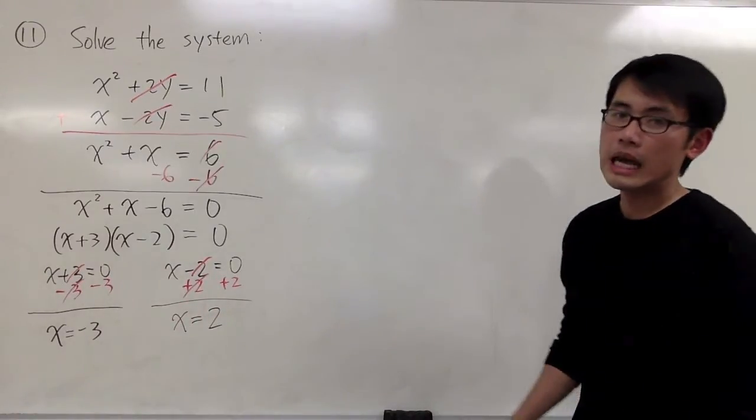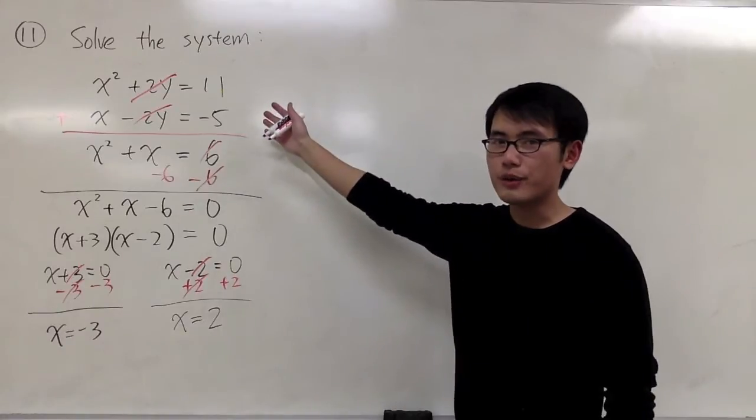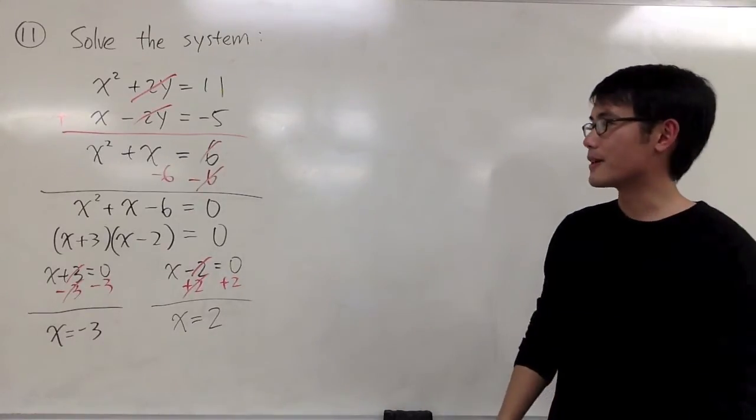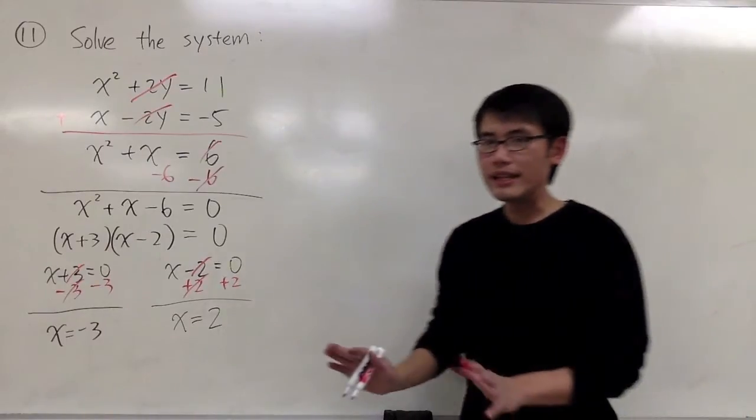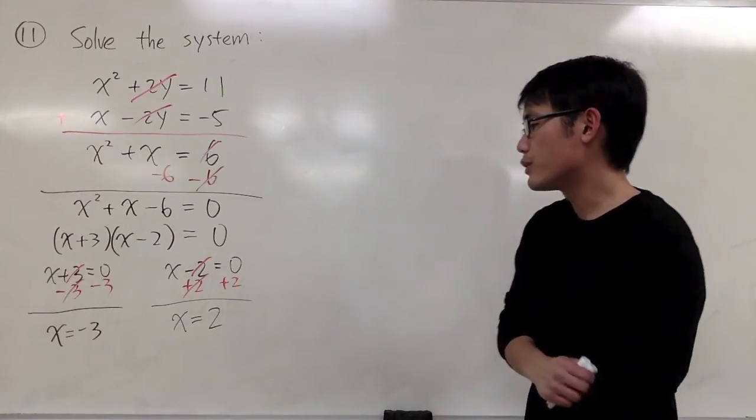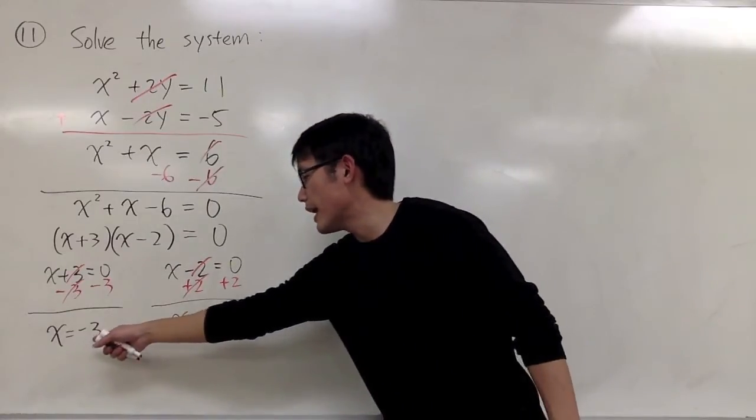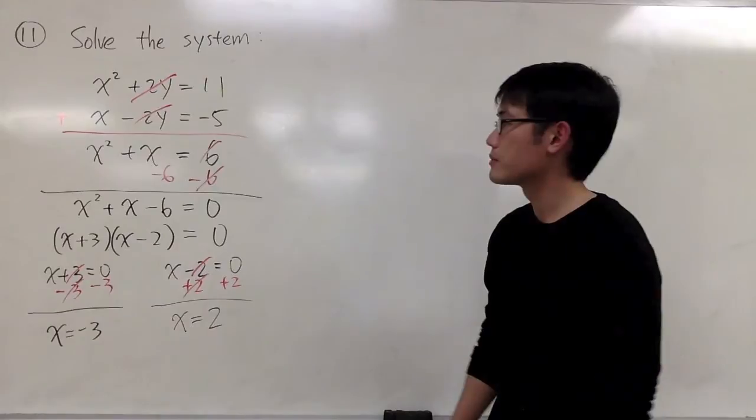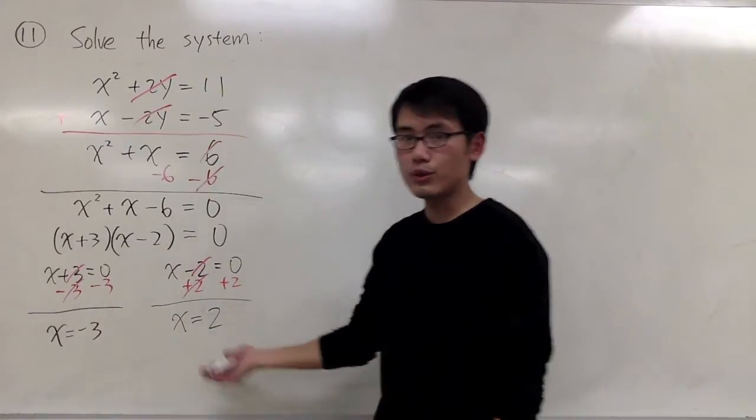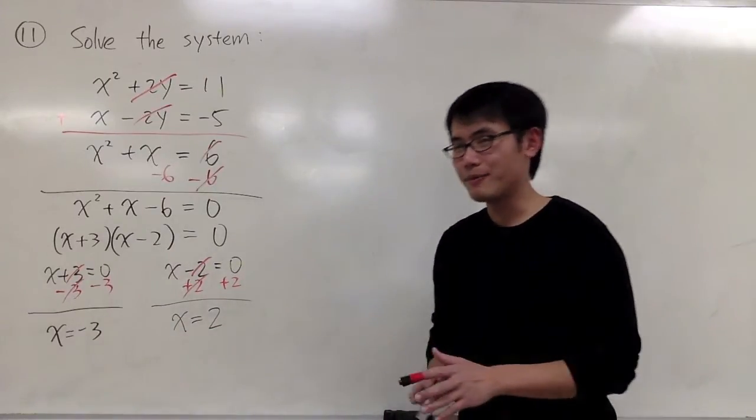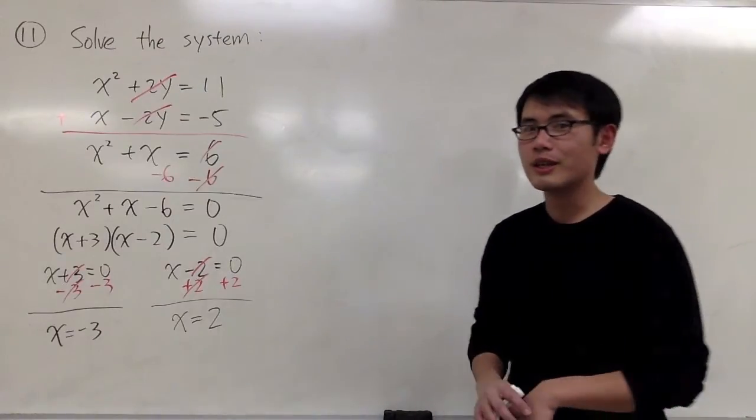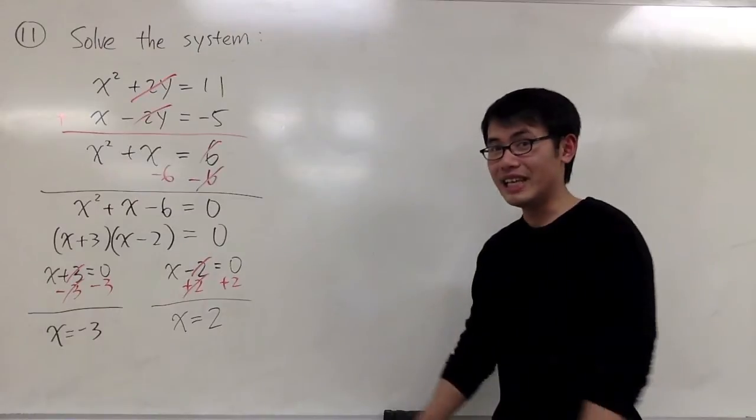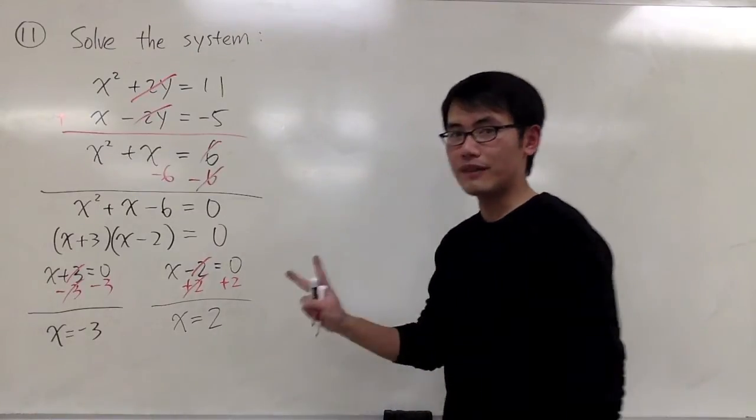However, we are not done yet. This is a system of equations. Once we get x, we also have to get y. And I'll just make a note right here. We have two numbers for x, two values for x. And we are going to have two solutions in this case. Sometimes you may have no solutions, two solutions, one solution, or maybe infinitely many solutions. But in this case, we are going to have two.